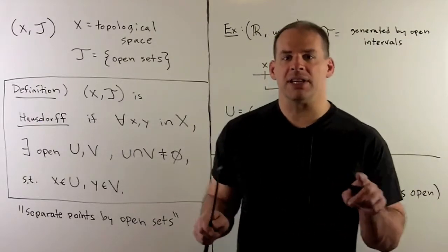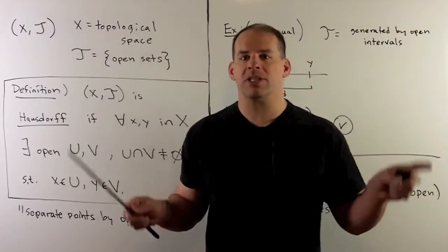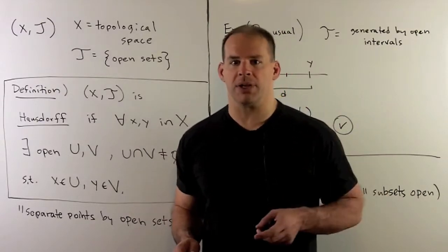So what this says is if we have any two distinct points in our space, we can separate those points by disjoint open subsets.